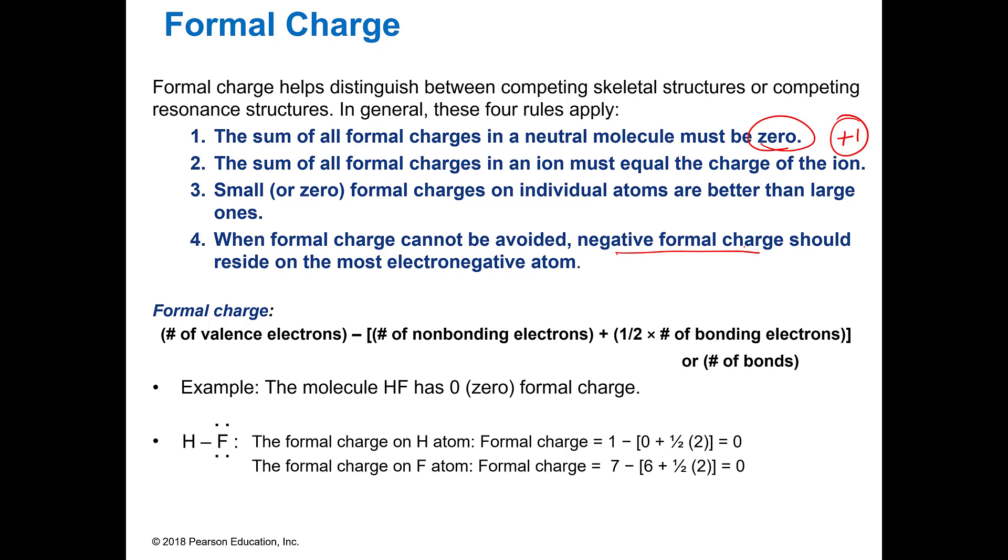The way you get the formal charge is you say the number of valence electrons, and we're doing this individually for each individual element. The number of valence that it has minus the number of non-bonding electrons, minus the number of bonds. And it's written a little bit different down here. That's why I'm showing you this way, because you can do it either way.